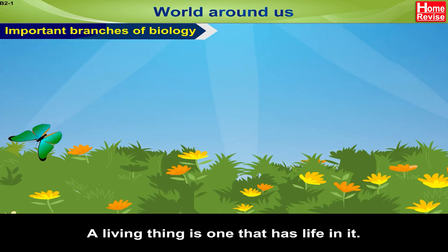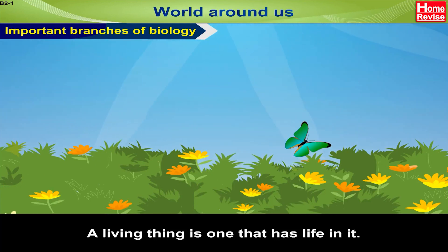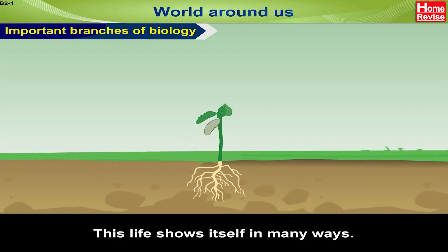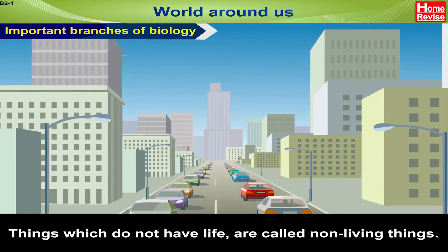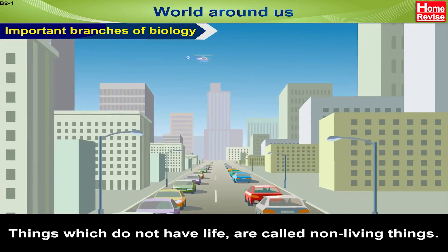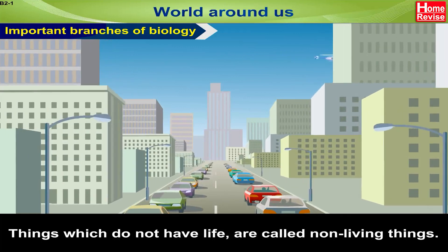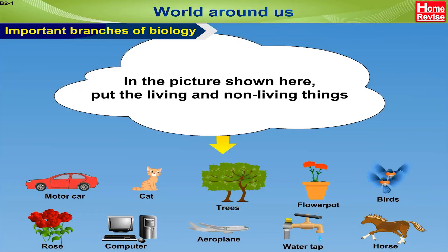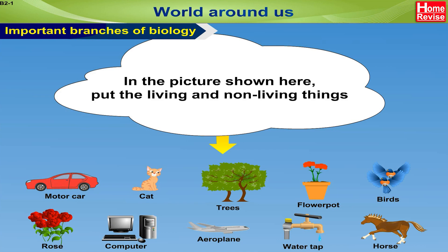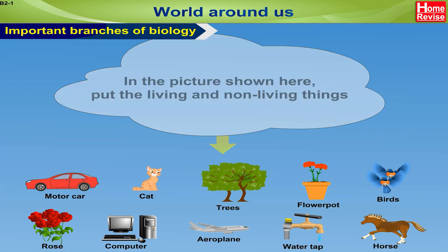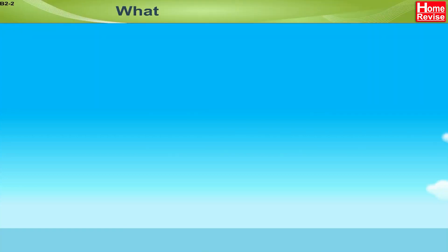A living thing is one that has life in it. This life shows itself in many ways. Whereas things which do not have life are called non-living things. In the picture shown here, put the living and non-living things into two separate groups. What do living things do?